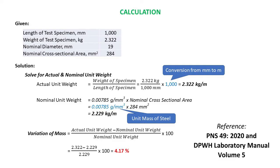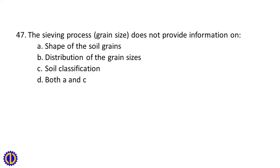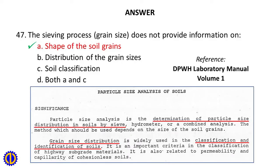Question 47: The sieving process/grain size analysis does not provide information on A. Shape of the soil grains, B. Distribution of the grain sizes, C. Soil classification, D. Both A and C. Answer: A. Shape of the soil grains. Reference: DPWH Laboratory Manual Volume 1, Particle Size Analysis of Soil — Significance.